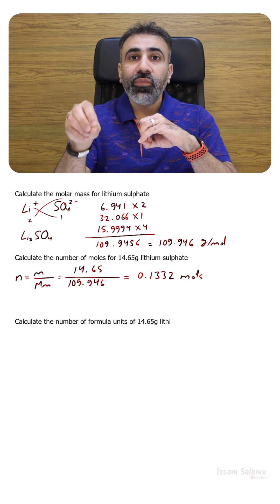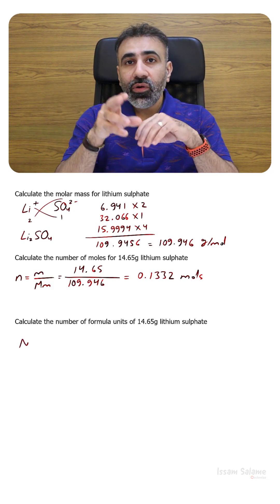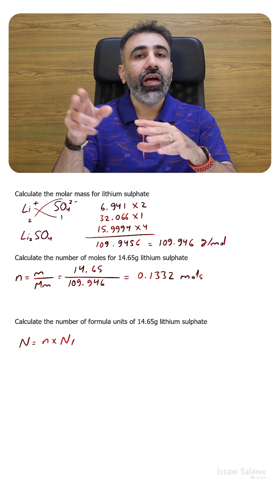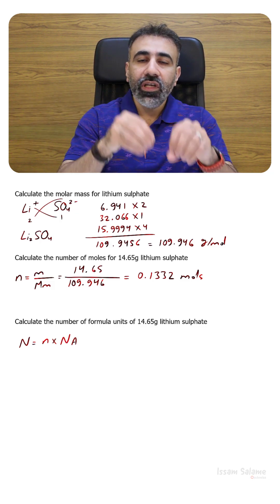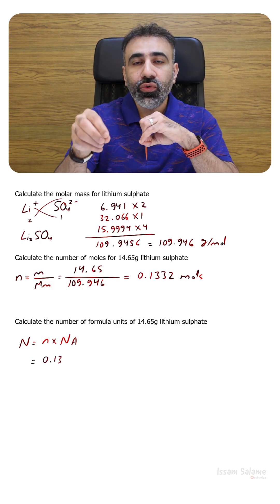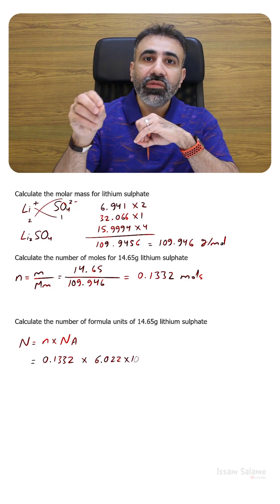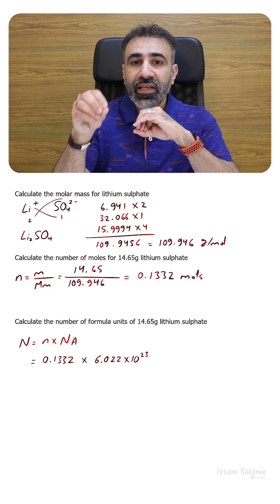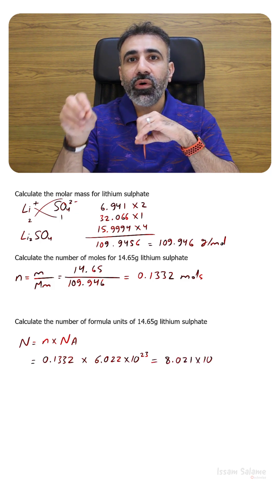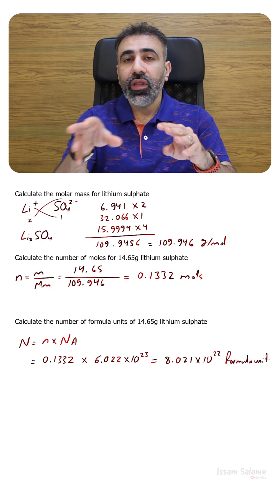If we want to calculate the number of formula units in 14.65 grams of lithium sulfate, we use the formula: number of formula units is equal to N, the number of moles, multiplied by NA, Avogadro's number. The number of moles is 0.1332, multiplied by 6.022 times 10 to the power 23. The answer is going to be equal to 8.021 times 10 to the power 22 formula units.